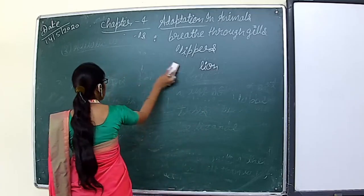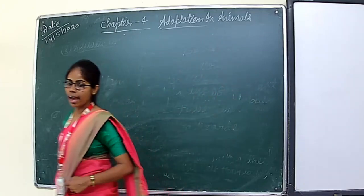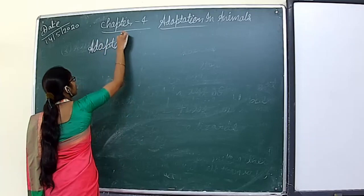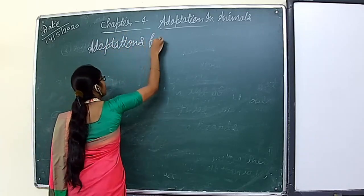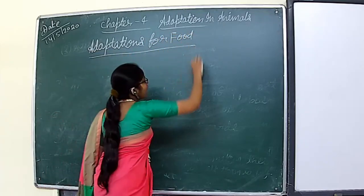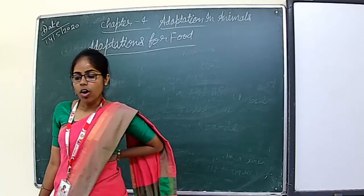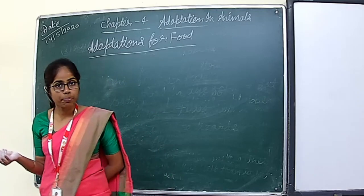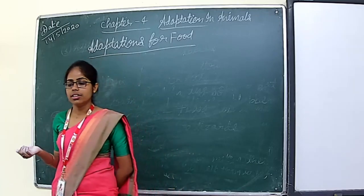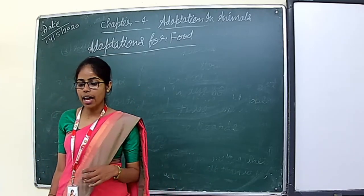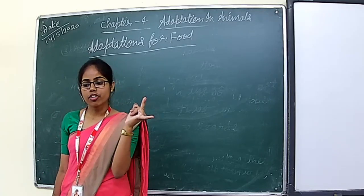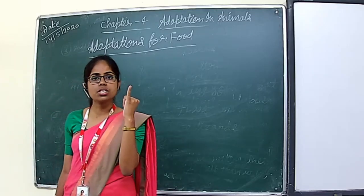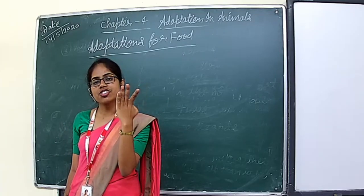Now we will study about the next categorization of animals based on their eating habits — adaptation for food. Animals eat different kinds of food, and different animals are gifted with special body parts to eat their kind of food. They can be classified according to their eating habits into several categories: herbivores, carnivores, omnivores, scavengers, and parasites.